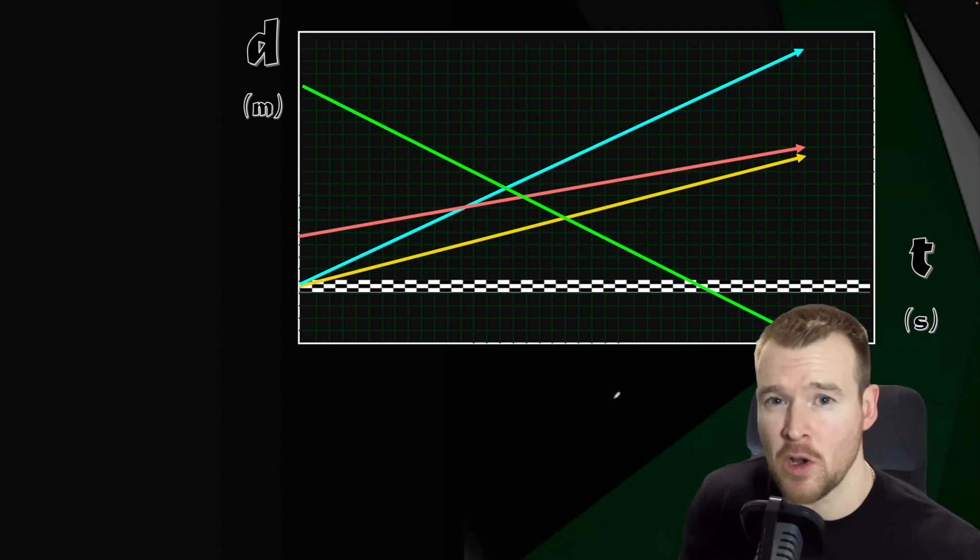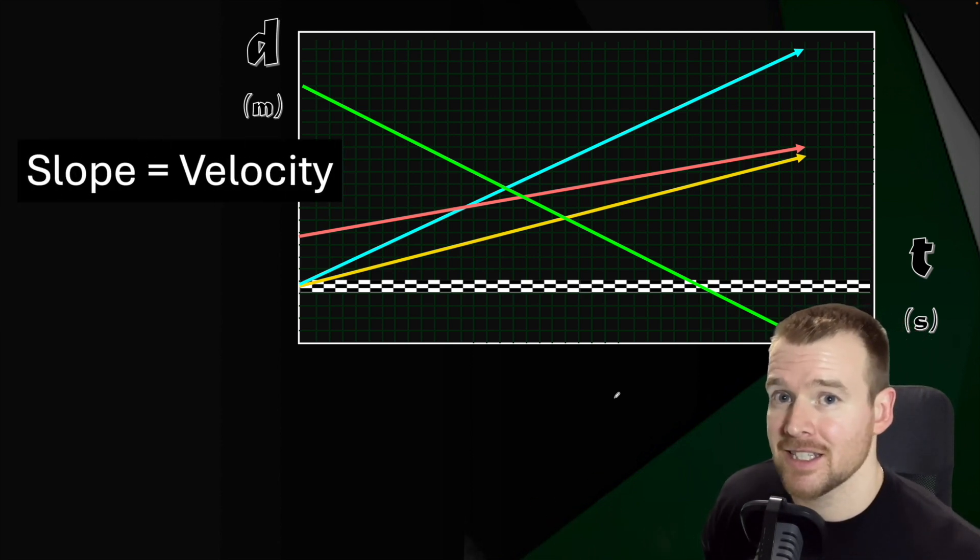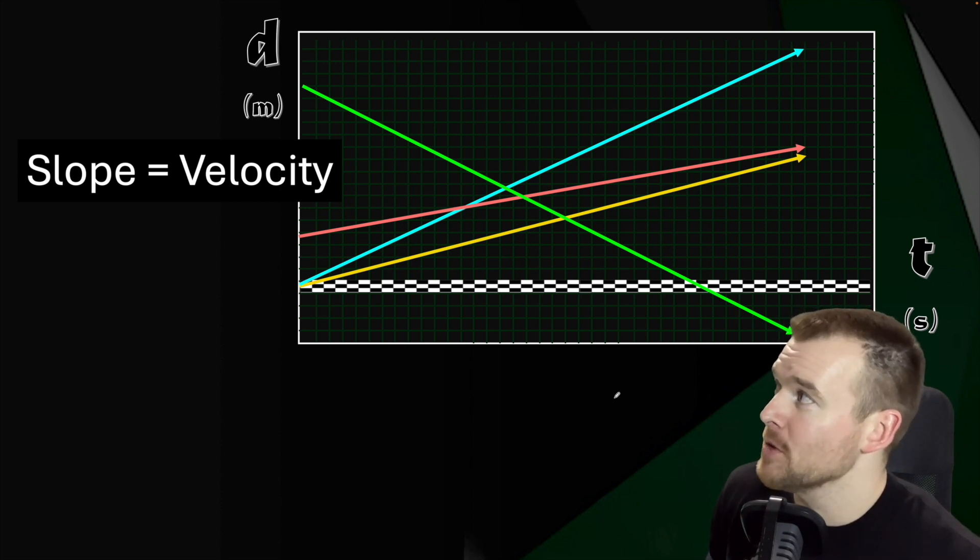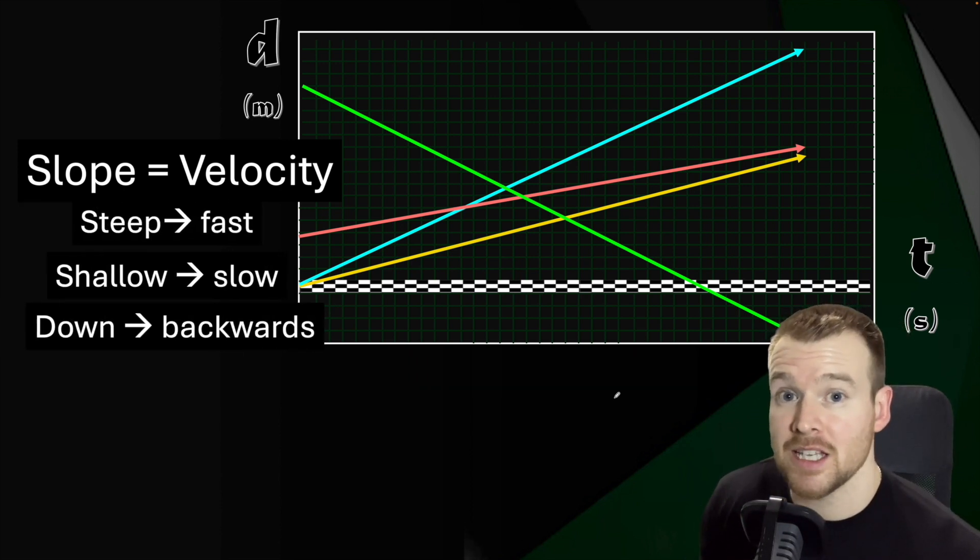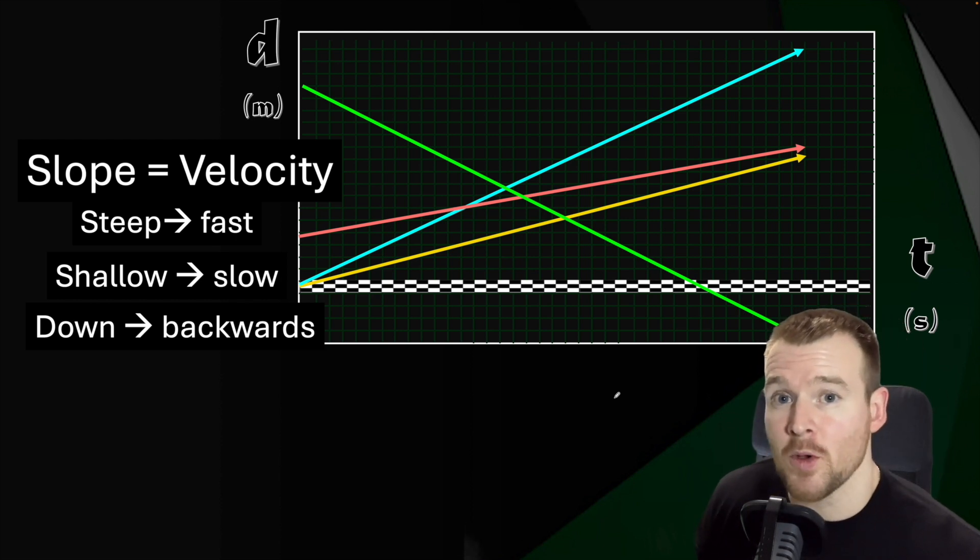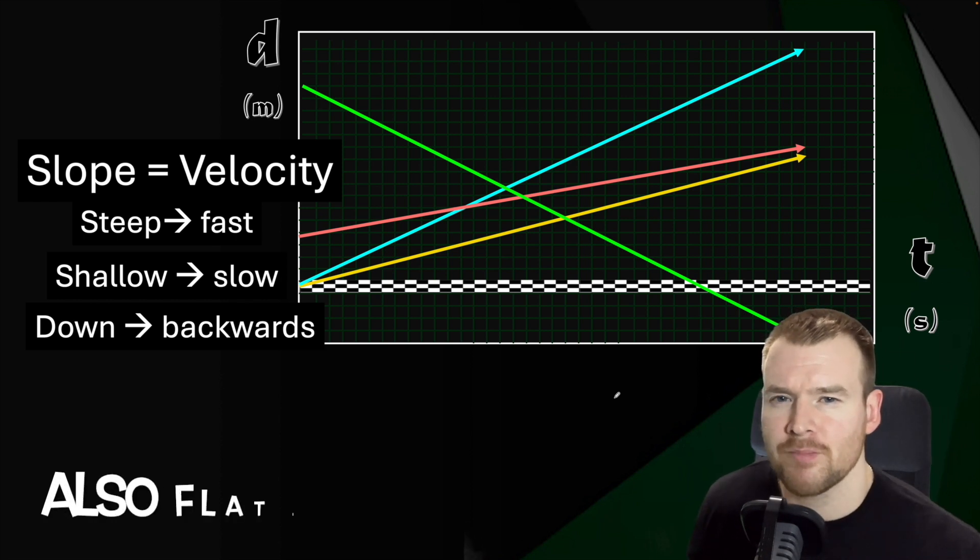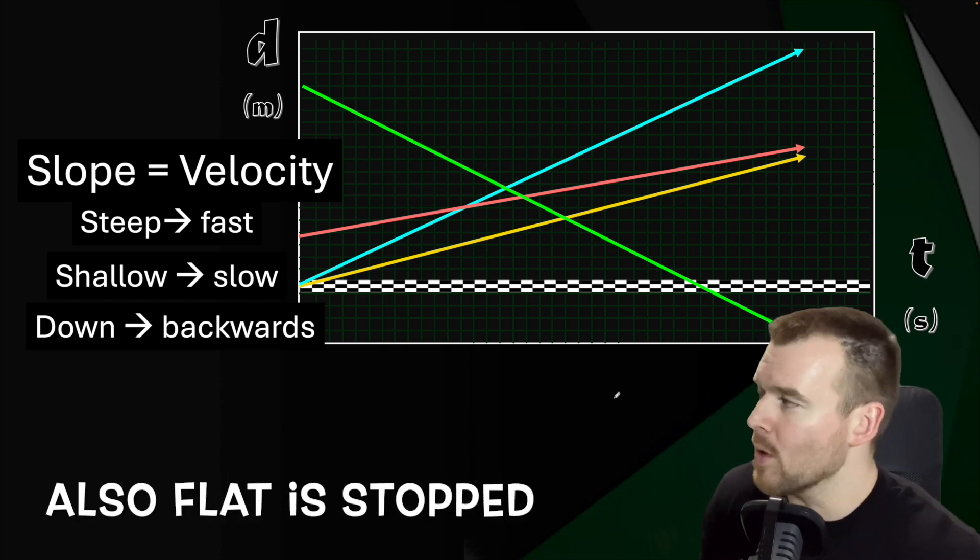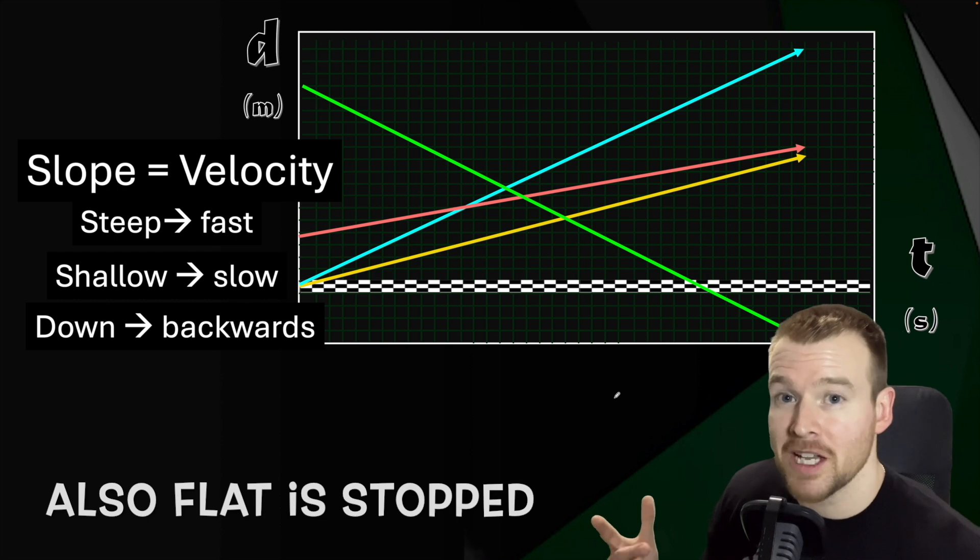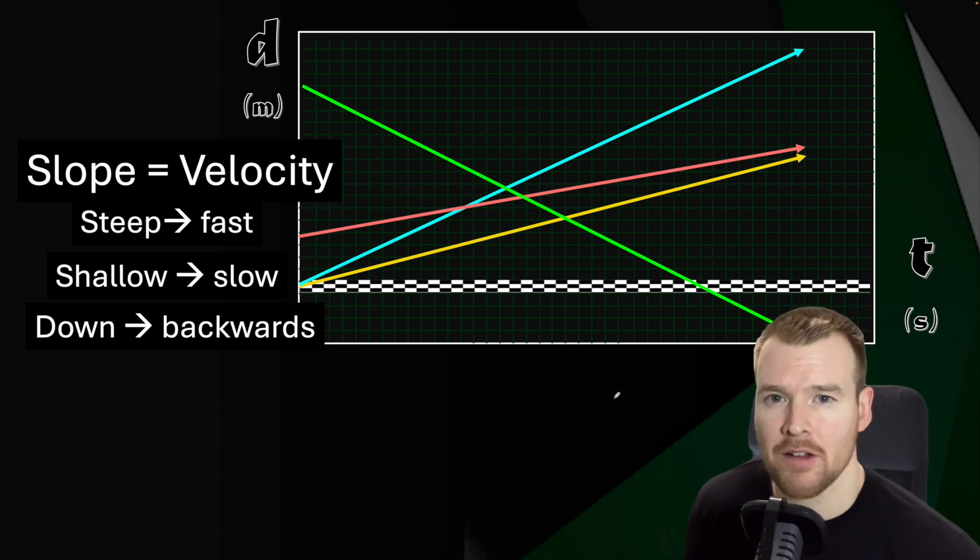So how steep it is is going to tell me how fast. If it's going up, that's forwards. If it's going down, that's backwards. So there's often theory questions that ask about that, comparing velocities or getting information from the graph. How basically we read what's going on here is that the steepness, the slope is equal to the velocity. That means if it's steep, it's going to be going fast. If it's shallow, it's going to be going slow. And then again, if it's going down, it's going to be going backwards. That's the theoretical part of understanding what's happening in the picture. We can imagine the car is moving based off this graph. What if we actually have to calculate the number?